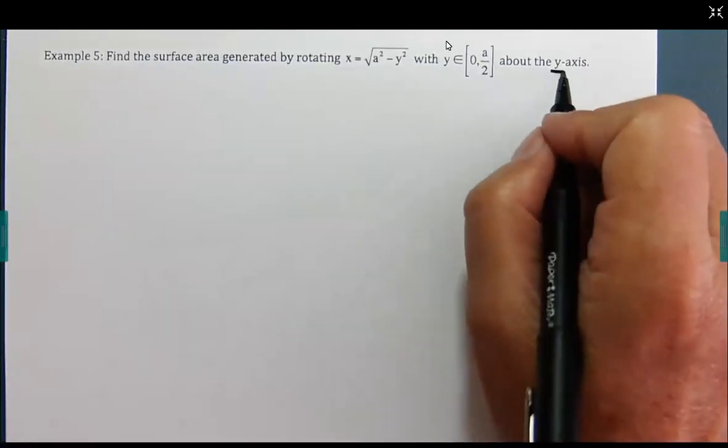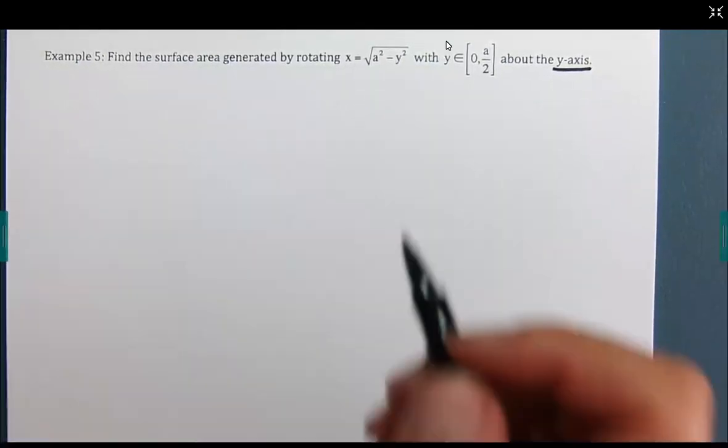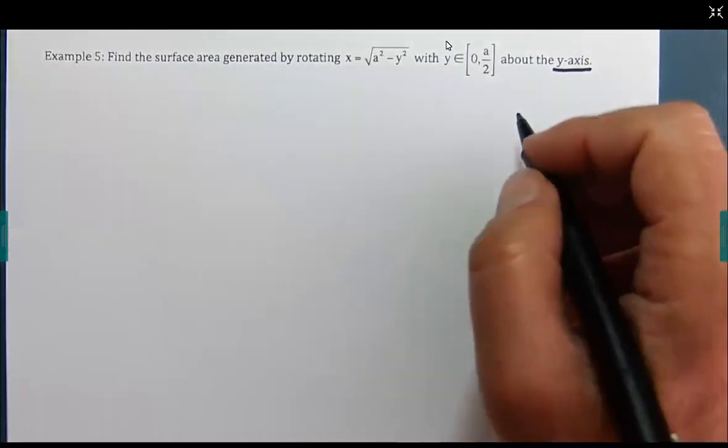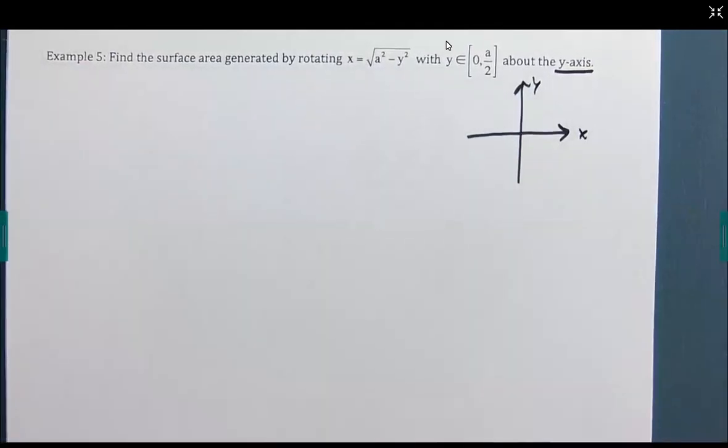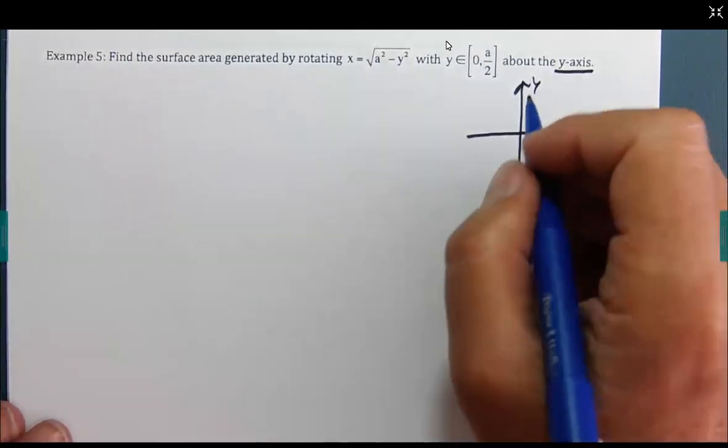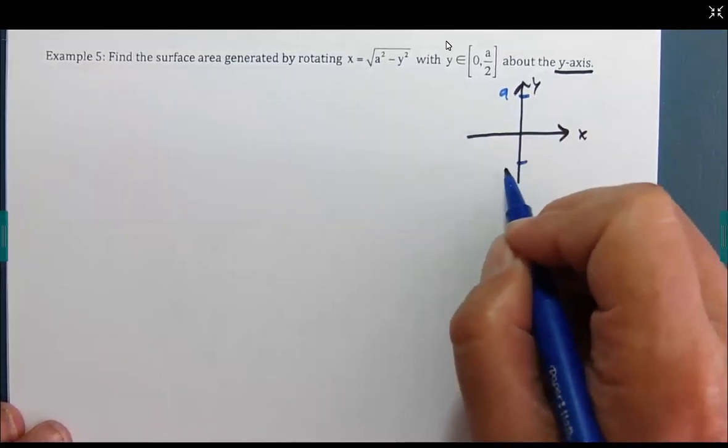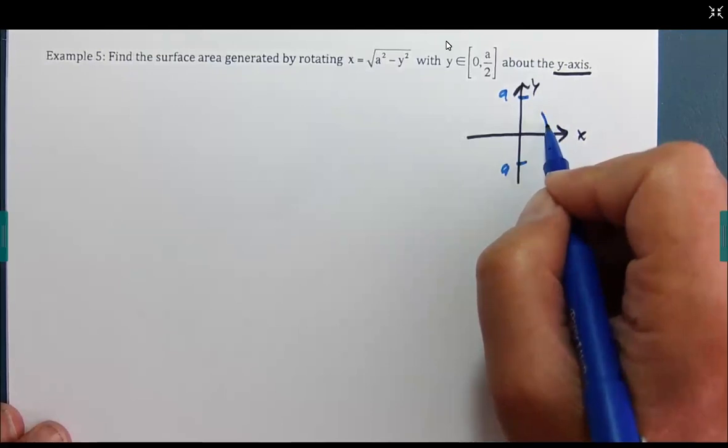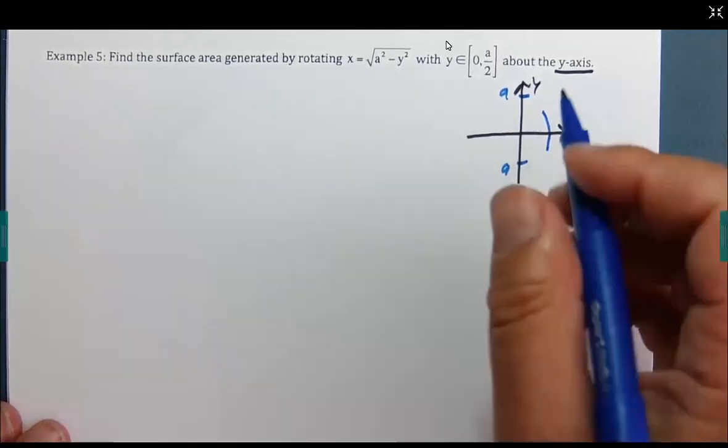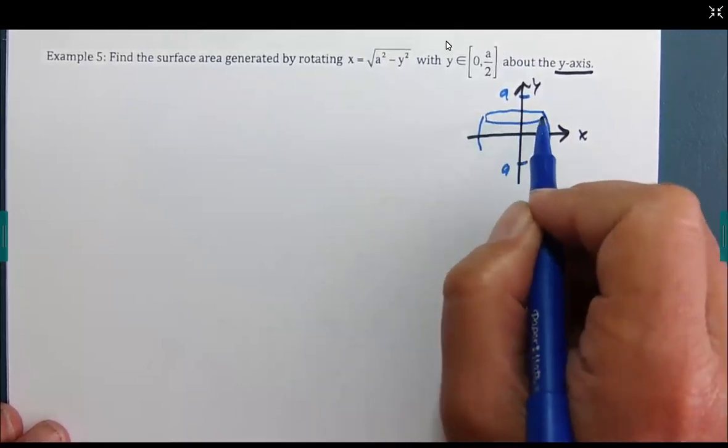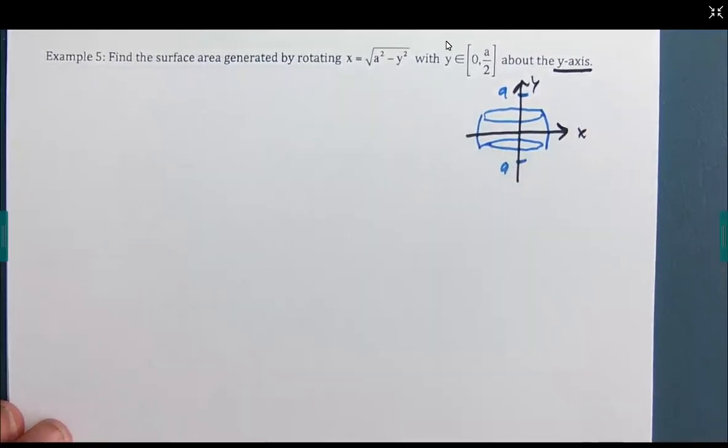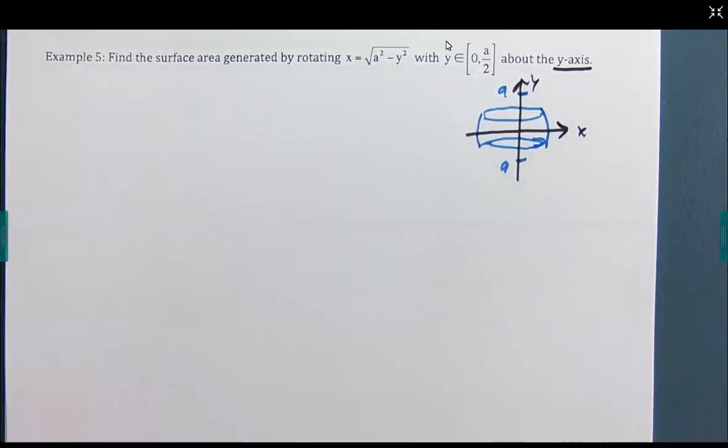Surface area generated by rotating this over the x axis. And we're going to have y go from 0 to a/2. So because we're going about the y axis, and what we have here is a circle, we solve for x. So this is the right side of a circle. And y is going from, so if this is a, this is negative a. a/2 is going to be about here to here. And we're going around the y axis. So that's the shape. That should be on it. Of course. And so we're trying to find that surface area.